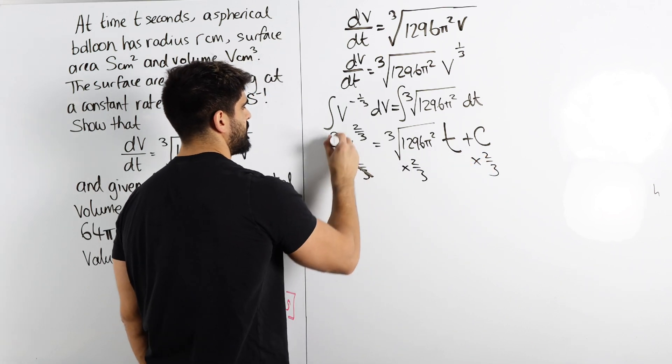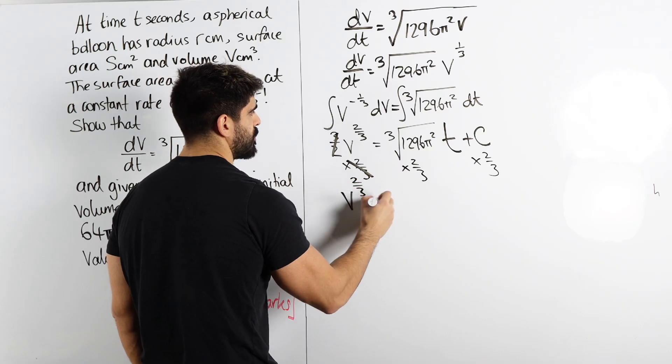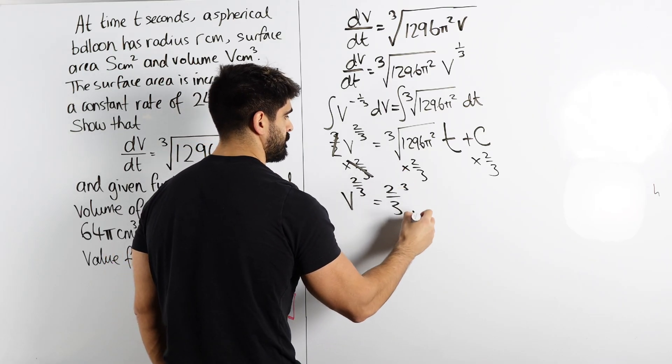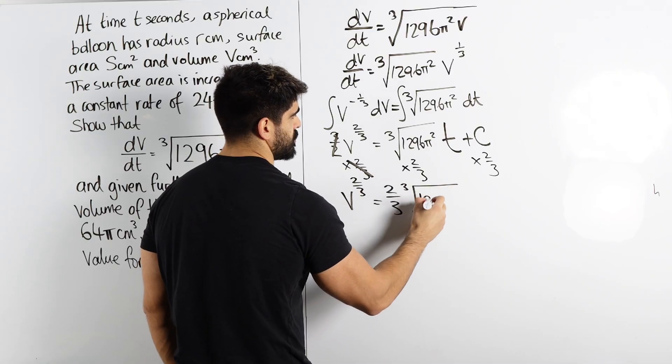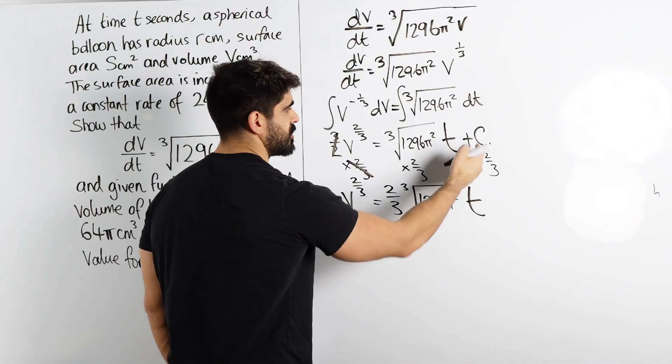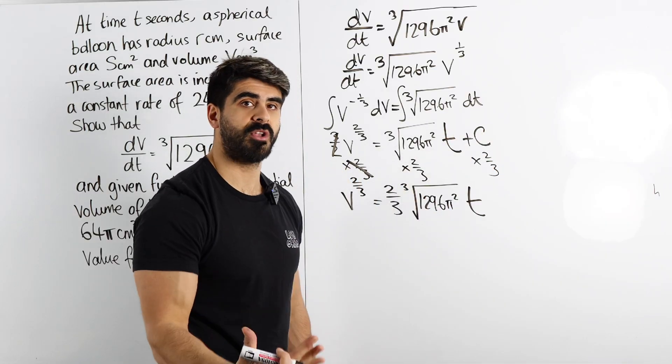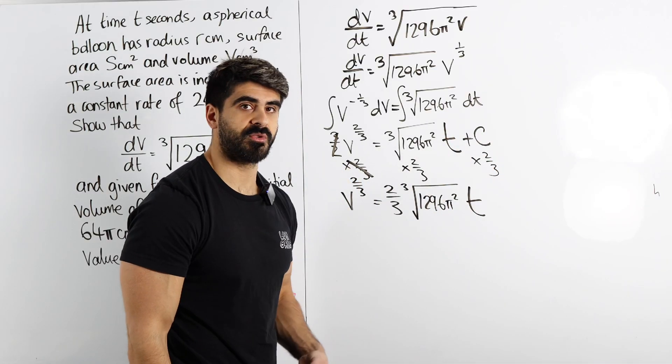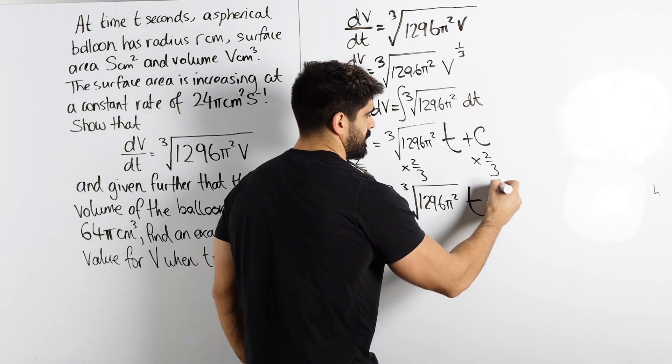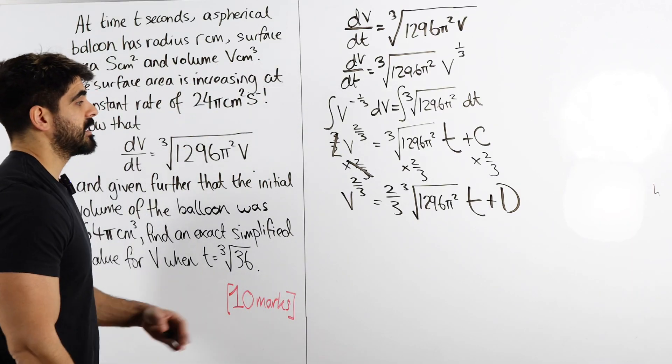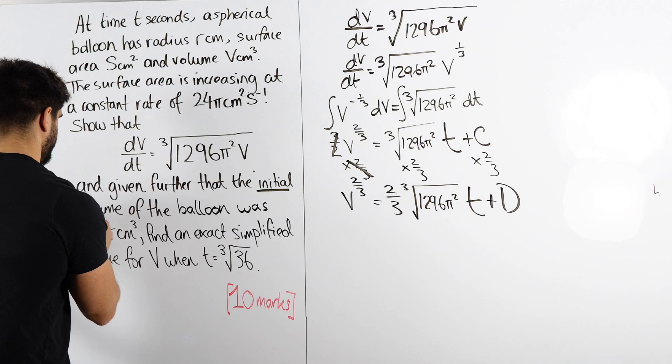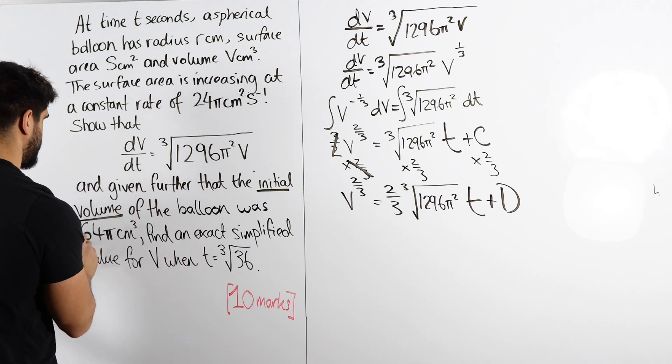And the reason this is nice is because we can absorb the constant. So we're going to get 2 thirds of this cube root 1296π squared t. But c times 2 thirds, c is a number we don't know yet. When you times it by 2 thirds, it's still a number we don't know yet. We can absorb it into a new constant, d.